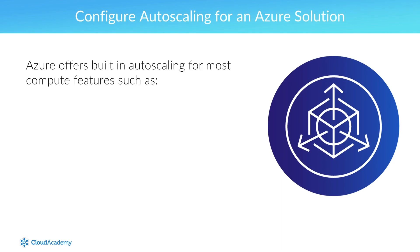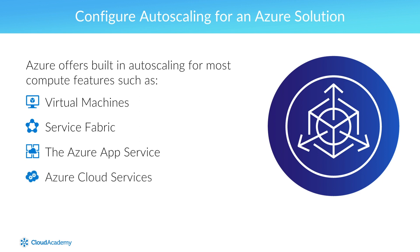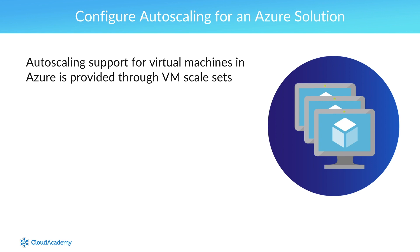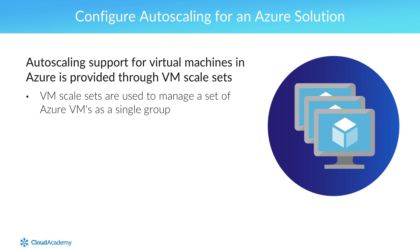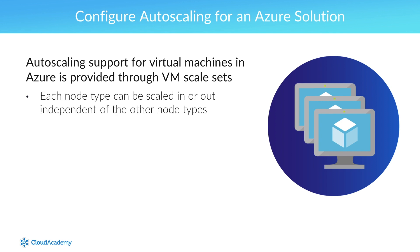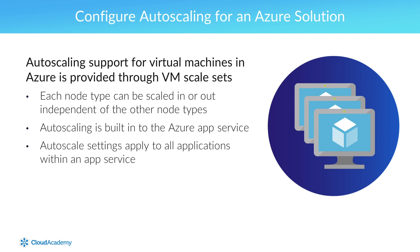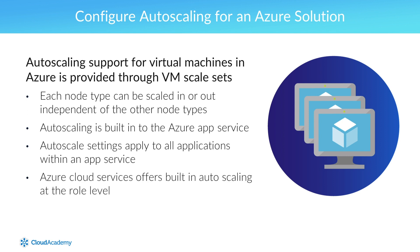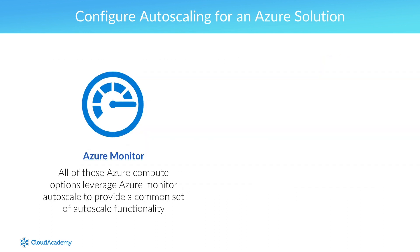Microsoft Azure offers built-in autoscaling for most compute features, including virtual machines, Service Fabric, the Azure App Service, Azure Cloud Services, and Azure Functions. Autoscaling support for virtual machines is provided through VM scale sets, which are used to manage a set of Azure VMs as a single group. VM scale sets also support autoscaling for Service Fabric, where each node type in a cluster is configured as a separate VM scale set and can be scaled in or out independently. All these Azure compute options leverage Azure Monitor autoscale to provide a common set of autoscale functionality.